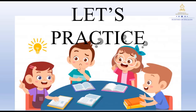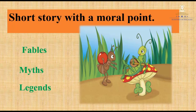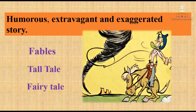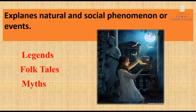Now let's practice. Let's read the sentences and identify what kind of story each one is. Short story with a moral point — Fables. Humorous, extravagant, and exaggerated story — Tall tale. Explains natural and social phenomena or events — Myth.